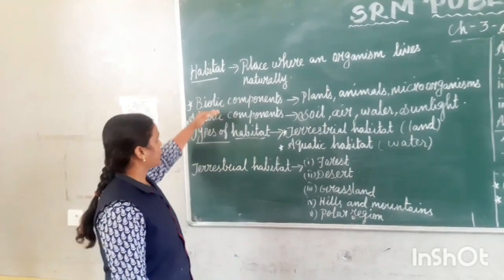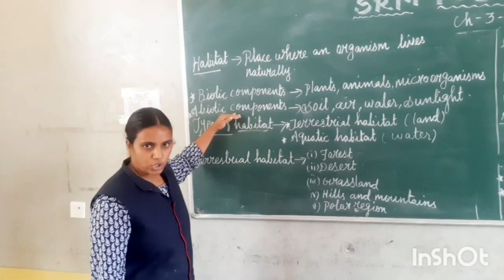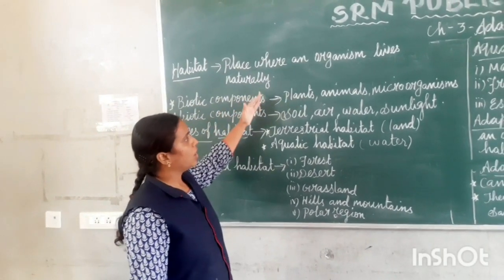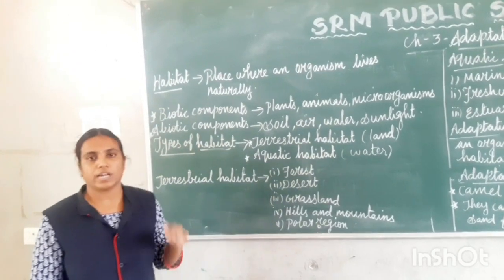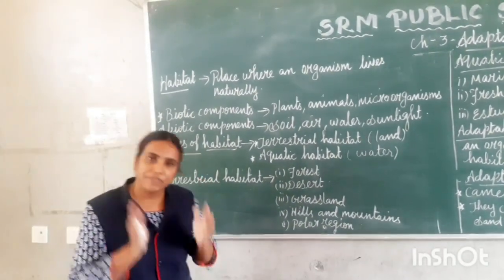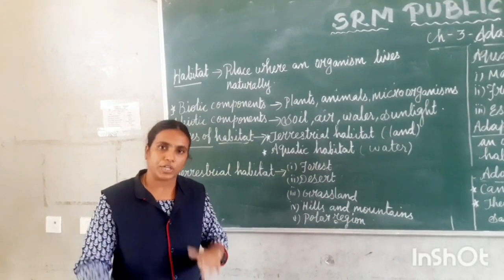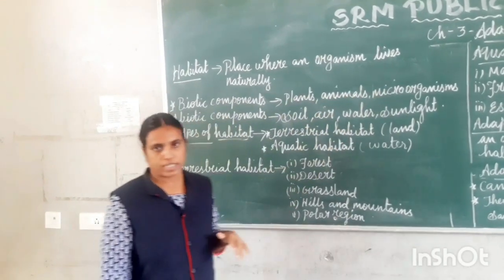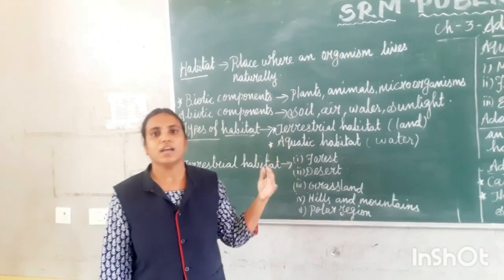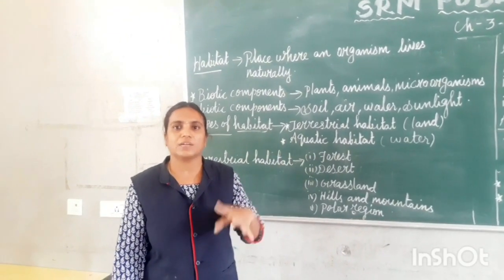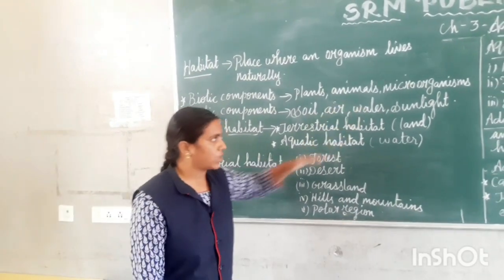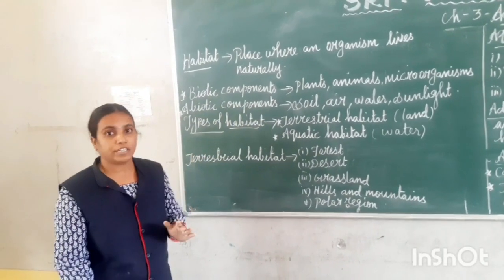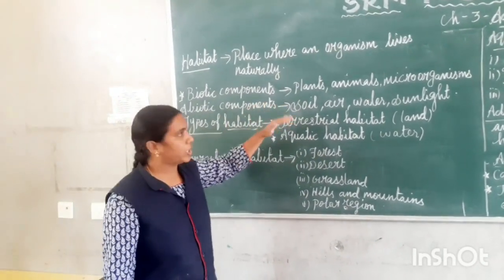The habitat contains two types of components: biotic components and abiotic components. Biotic components are all living things — plants, animals, and microorganisms. Microorganisms include viruses and bacteria. Abiotic components are all non-living things.